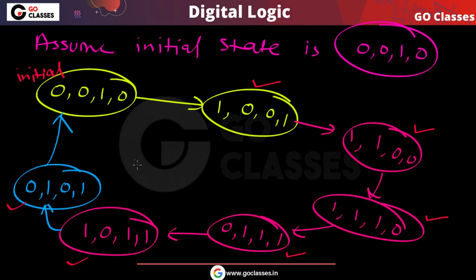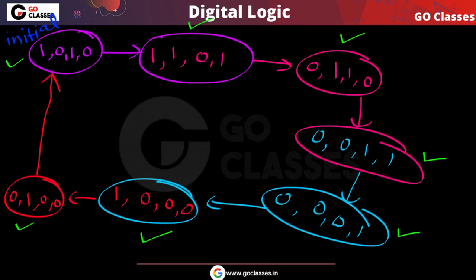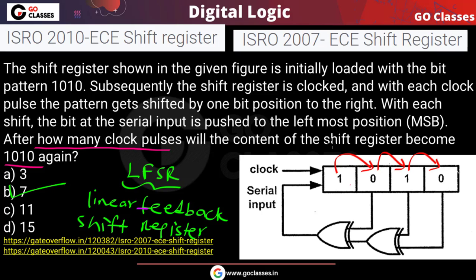So for this 4-bit LFSR circuit, starting from any non-zero state, you can generate a maximum of 7 distinct random patterns. This is the complete analysis of this question.